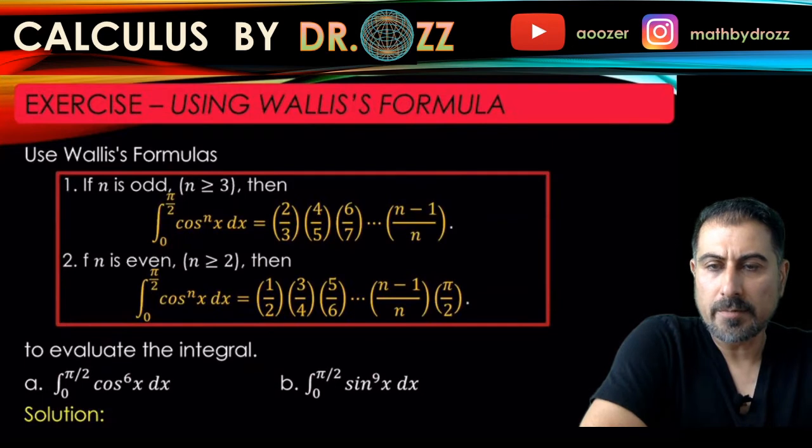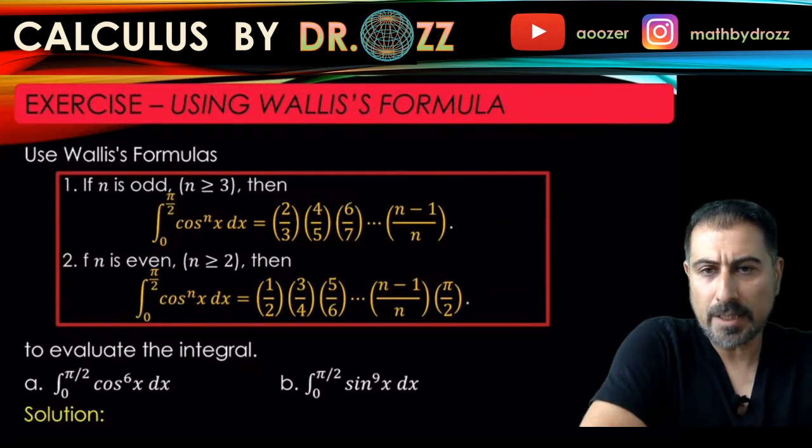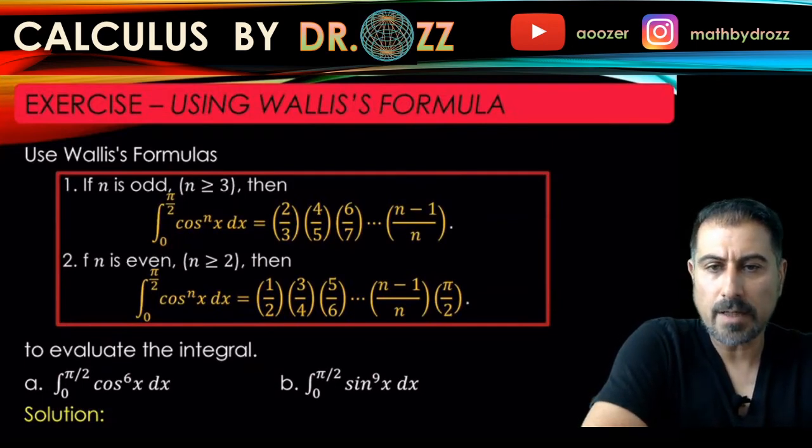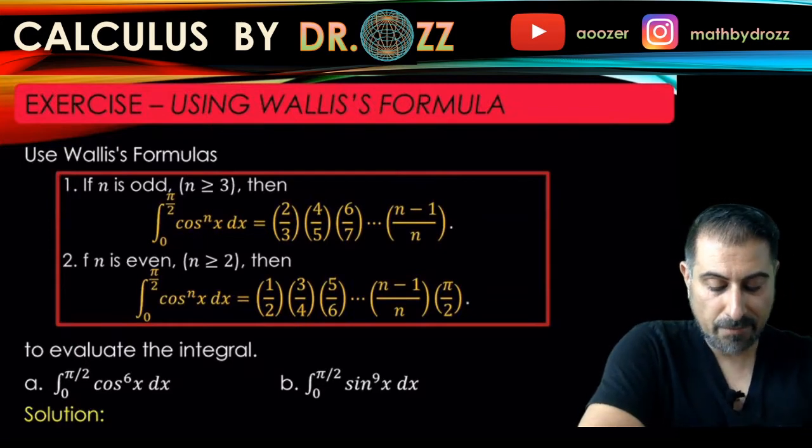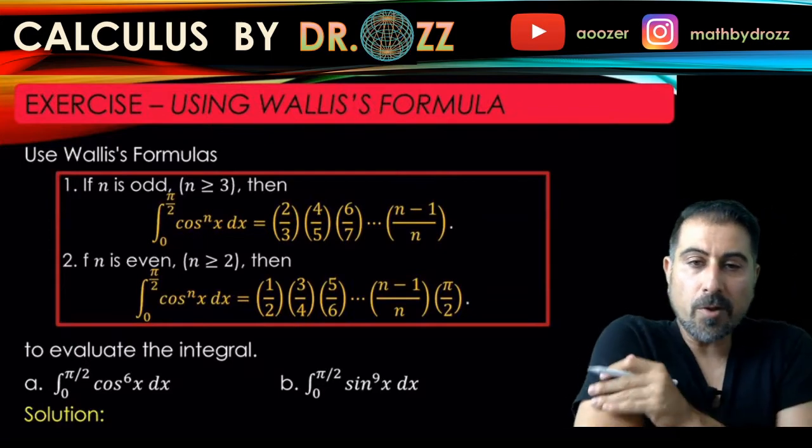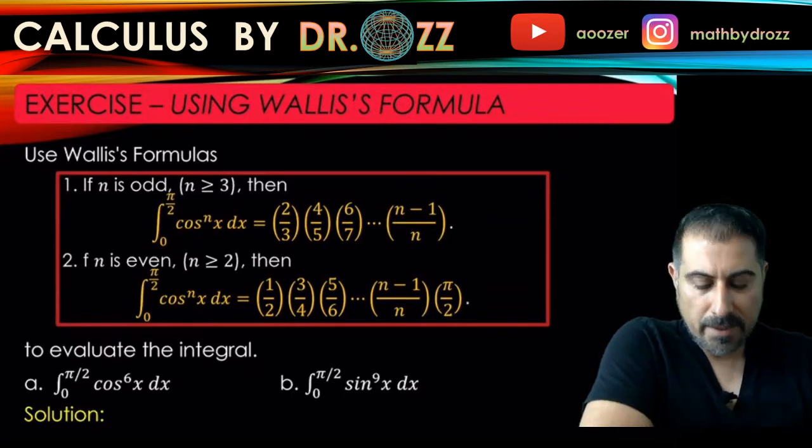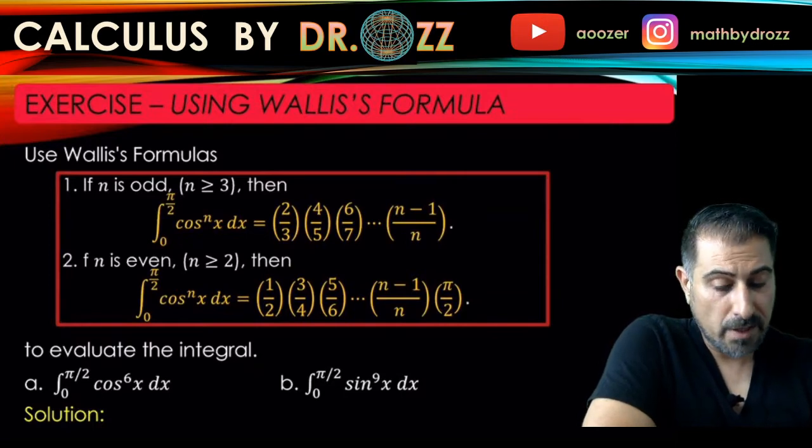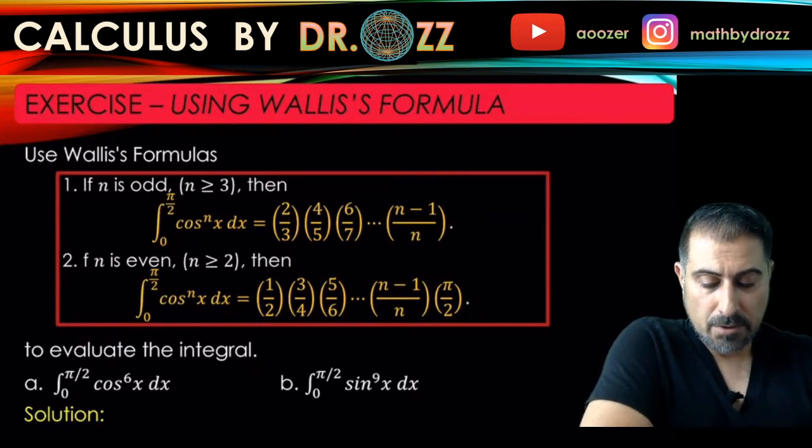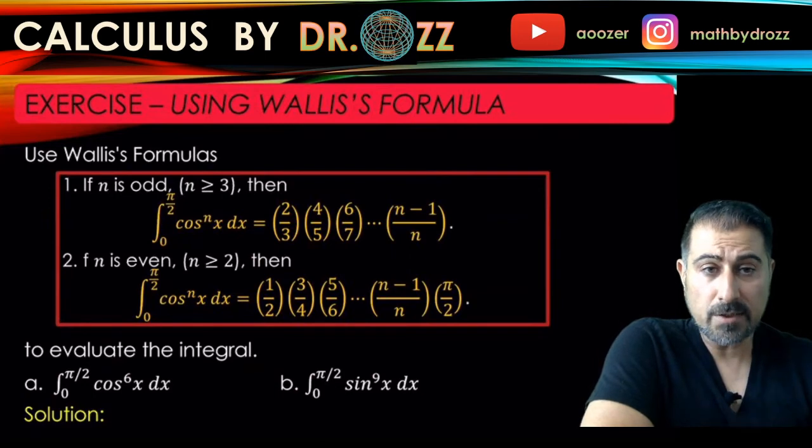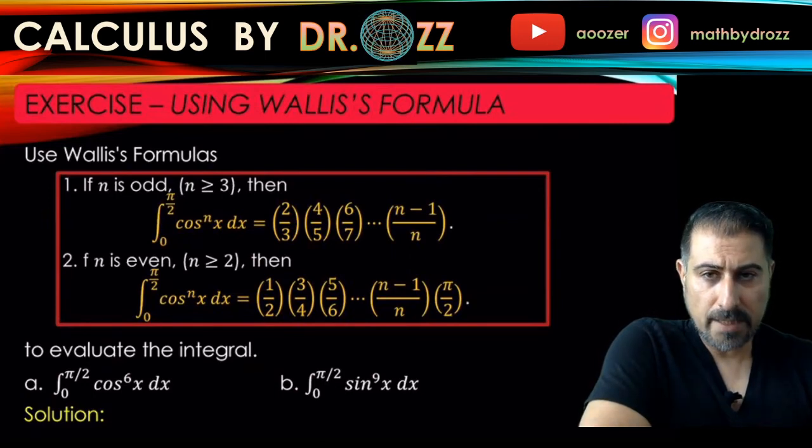And just to remind you, Wallis's formula is only applicable for the interval 0 and pi over 2. Fortunately, we have the intervals in both part a and part b, 0 and pi over 2. In one case, you have the even power of cosine. In part b, we have the odd power of sine. I want to do two exercises in one shot in one video. So let's just do that all together.